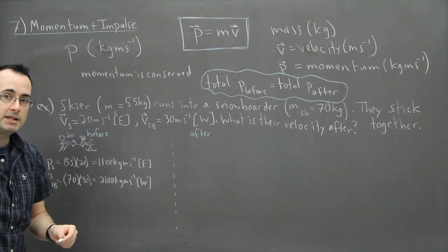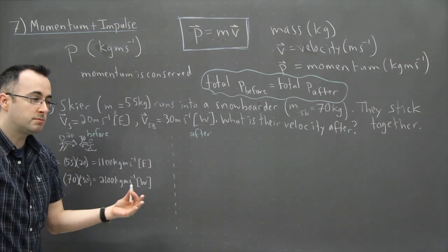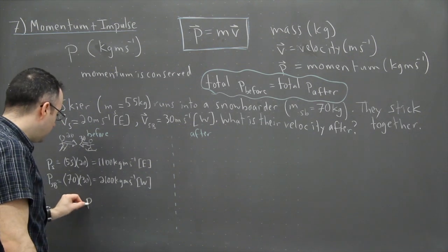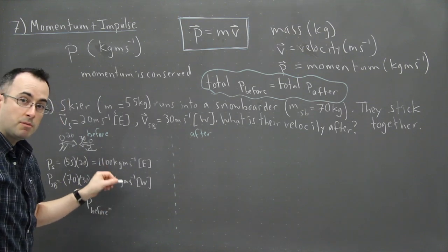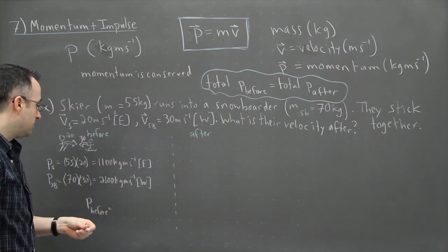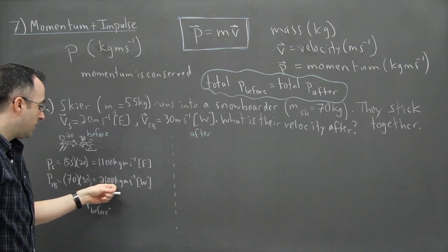Now what we need to do then is figure out what's the total momentum of the system. So in other words, P before. And it's just adding up these two. But remember, they're in opposite directions. So in this case, I can say 2100 minus 1100.